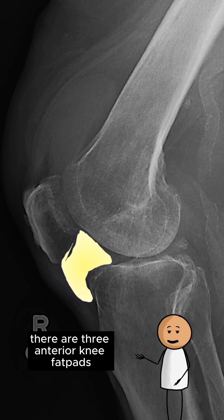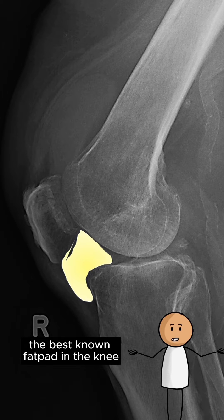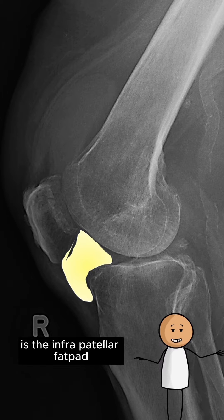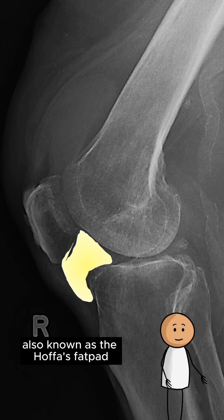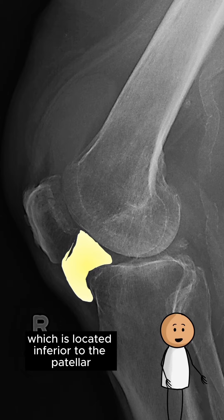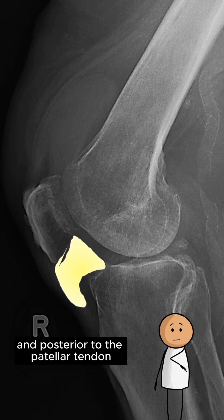There are three anterior knee fat pads. The best known fat pad in the knee is the infrapatellar fat pad, also known as the Hoffa fat pad, which is located inferior to the patella and posterior to the patellar tendon.